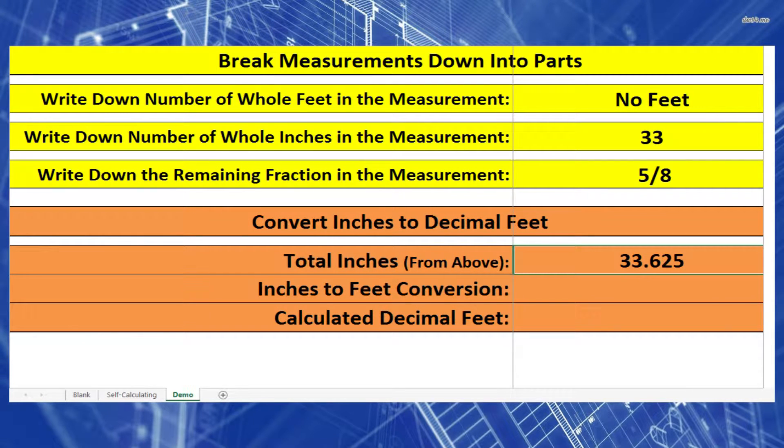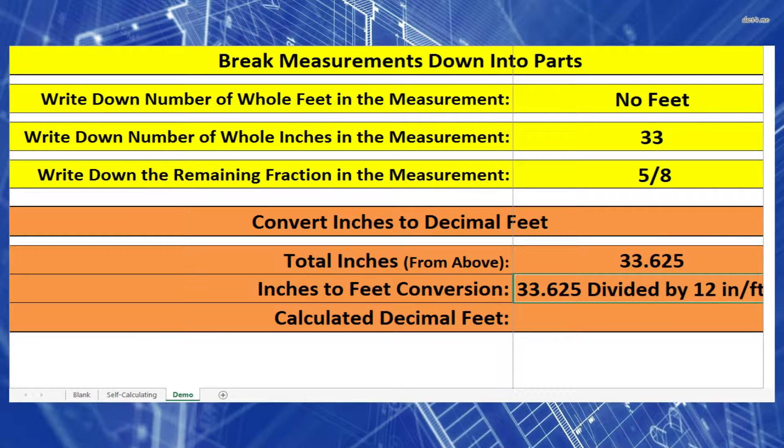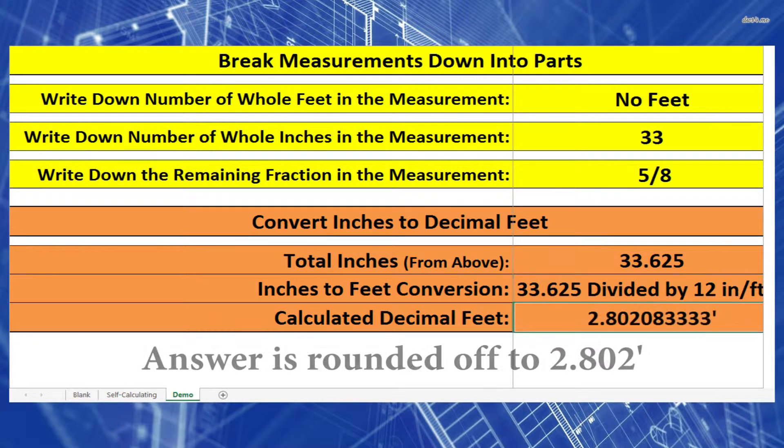Let's bring this into feet. So I'm just going to take that whole number and divide it by 12 inches per foot, and I should get my answer. So 33.625 inches divided by 12 inches per foot equals 2.802 feet.